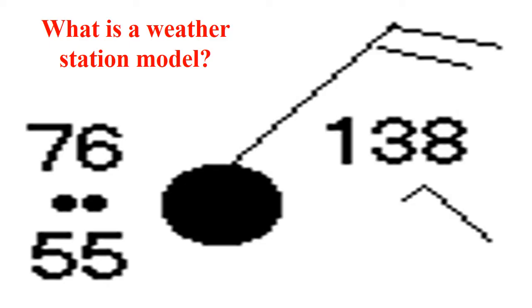Weather reports contain an immense amount of data: cloud cover, temperature, dew point, wind speed, wind direction, pressure, current weather, and pressure tendency. It is required for this information to be represented in a clear and concise manner. It is for this reason that the weather station model is used.